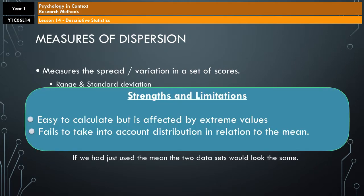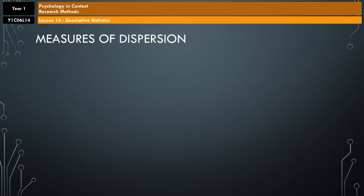Now, the good thing about the range is that it's really easy to calculate. However, the downside is that it is affected massively by extreme values. More importantly, it only takes the two most extreme values into account. That means it fails to take into account the distribution of the values in relation to the mean, which is where the standard deviation comes in.